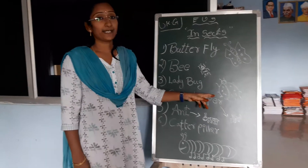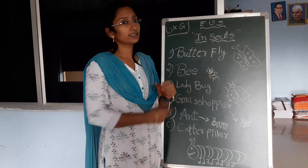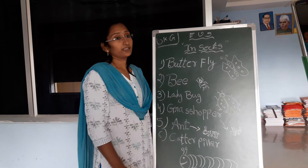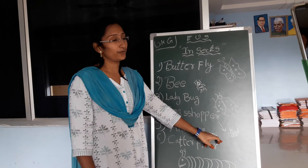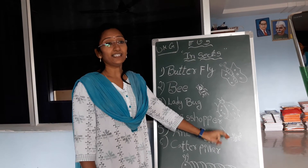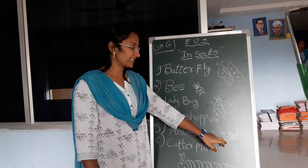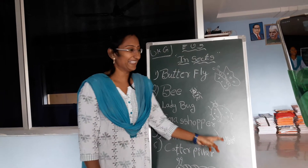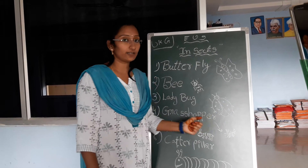Ladybug — have you seen that, children? Ladybug. In villages and cities also, insects are there. Outside you can see them too. Grasshopper — all have seen that. Grasshopper lives in grass, that's why it is called grasshopper. Green color also — grasshopper color is green.